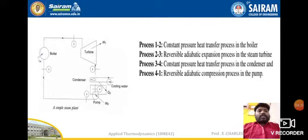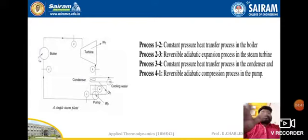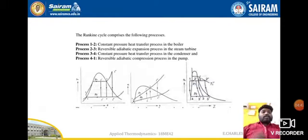To summarize the processes: 1 to 2 is constant pressure heat addition; 2 to 3 is reversible adiabatic expansion; 3 to 4 is constant pressure heat rejection in the condenser; and 4 to 1 is reversible adiabatic compression in the pump.